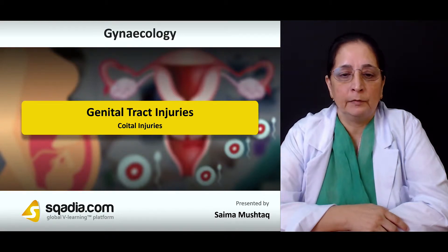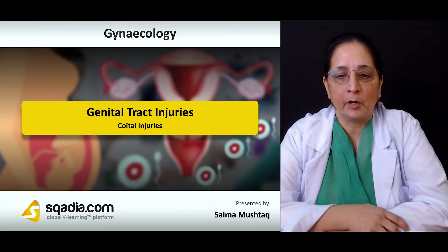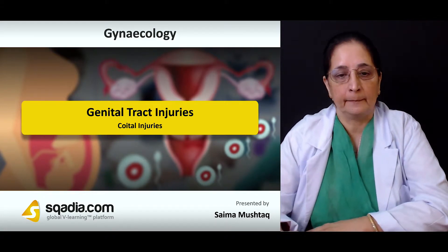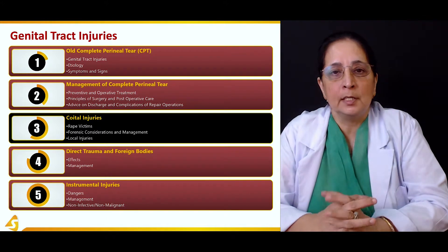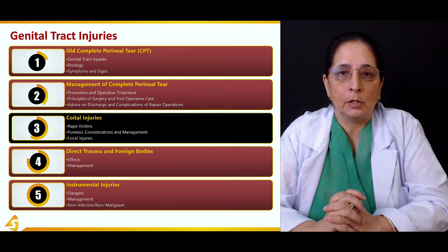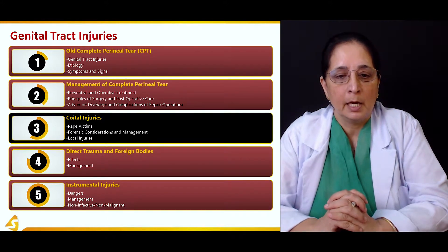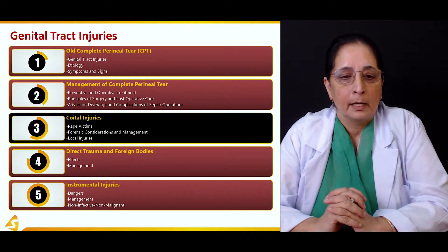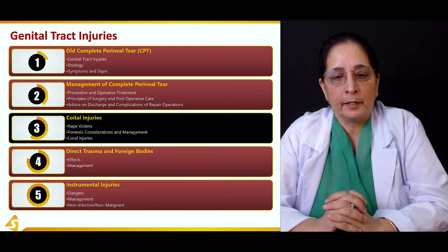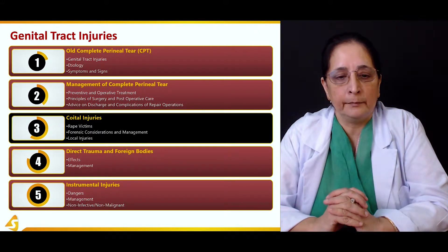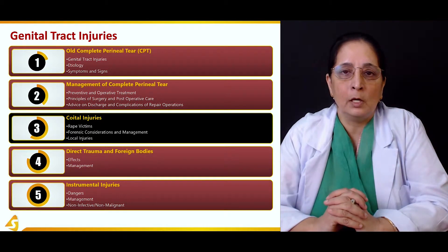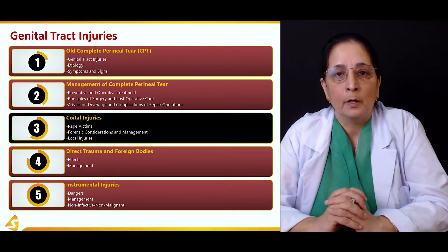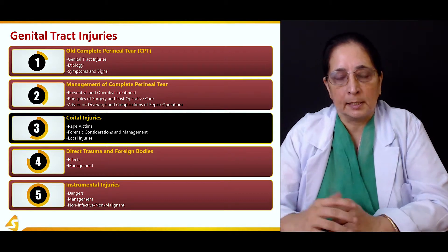In the third section of our lecture topic on genital tract injuries, we will talk about coital injuries. Coital injuries are injuries that occur as a result of intercourse. These are very common in rape victims, and we will discuss forensic considerations, management of victims, and local injuries as a result of rape or other coital injuries.